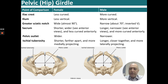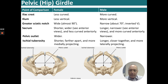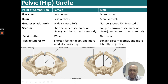The iliac crest is less curved in the female and more curved in the male, with the ilium being less vertical than in the male. The greater sciatic notch is wide in females versus narrower in males. The sacrum in the female is shorter and wider, while the male's is longer and narrower. The pubic outlet is wider in the female and narrower in the male. The ischial tuberosity is shorter and further apart and projected medially in the female, whereas it's stronger, closer together, and more lateral in the male — all contributing to a wider, more oval pelvic outlet for the female and a narrower, more heart-shaped outlet for the male.